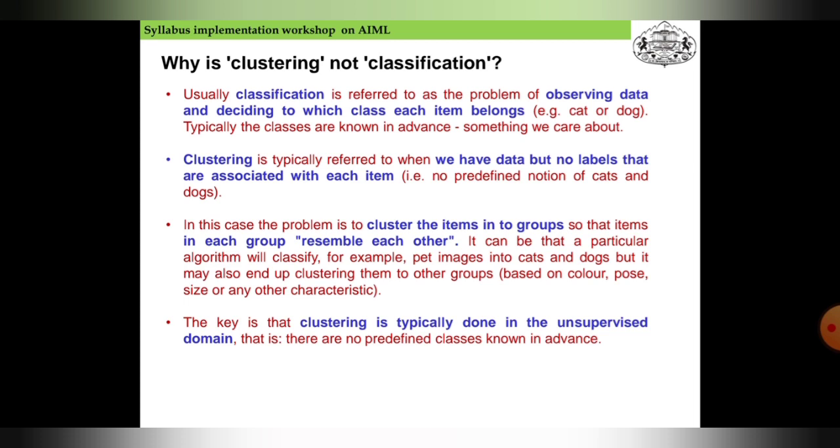There are no predefined classes known in advance. Clustering will gather the same amount of data with respect to a single characteristic, but in other clustering algorithms it may take data from the same type for different characteristics. So clustering may get confused and classification also comes into the picture.